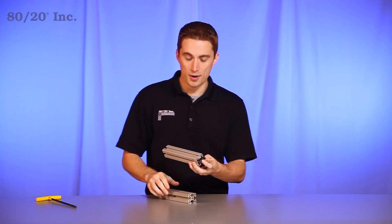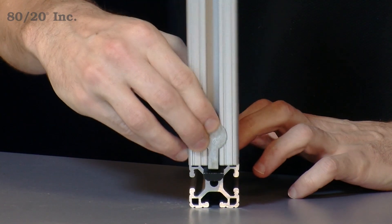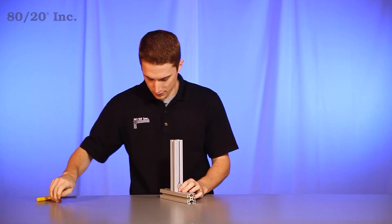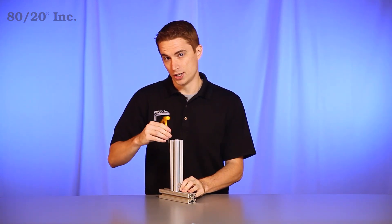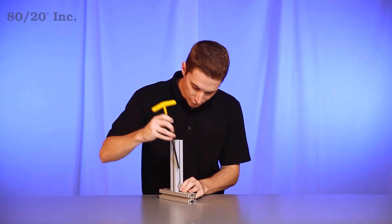At that point, we're ready for our other bar. We're going to slide the double anchor fastener into the bar and find our desired location. At that point, take your T-wrench and tighten down firmly.